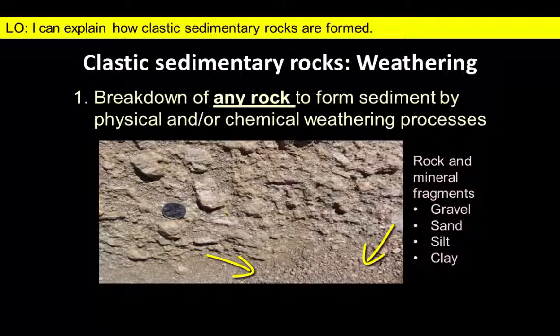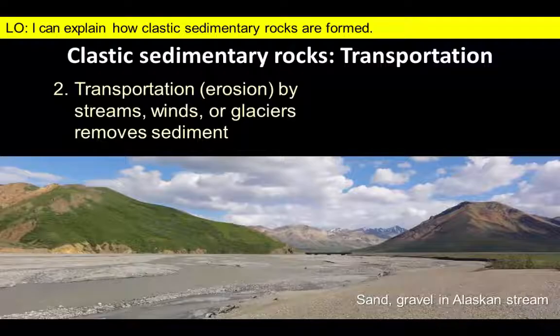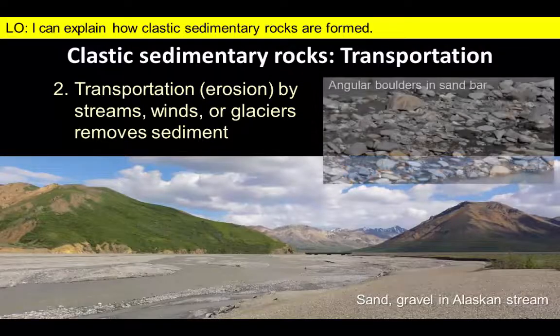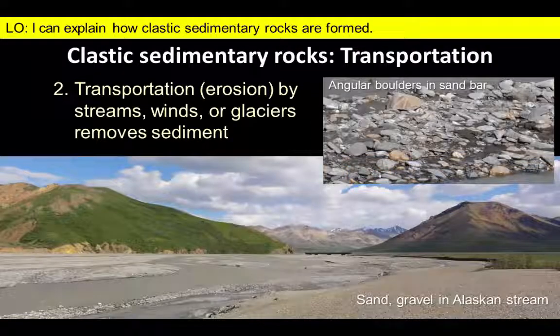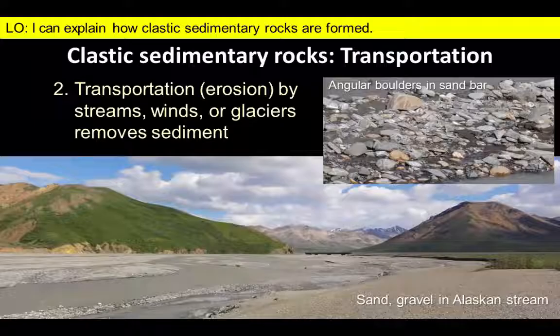Sediment like this is then eroded by transportation agents such as streams, winds, and glaciers. This river in Alaska is carrying a high sediment load, as reflected by the muddy color of the water and the sand and gravel bars in the stream channel.